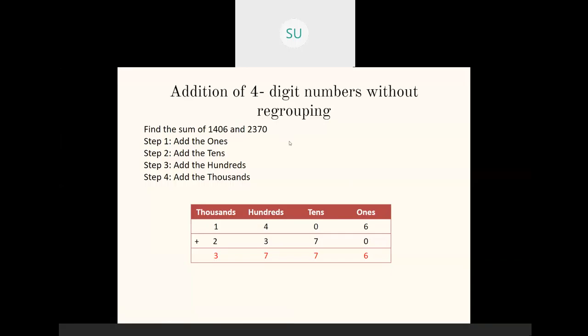Then the second step is to add the tens. The tens here are zero and seven, so zero plus seven will be seven. Then we move on to hundreds place — I have four and three, so four plus three will be seven. Then the last step is to add the digits in thousands place, which is one plus two equals three. So these are the different steps in adding four-digit numbers without regrouping.